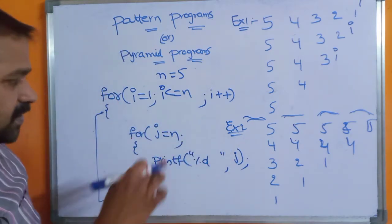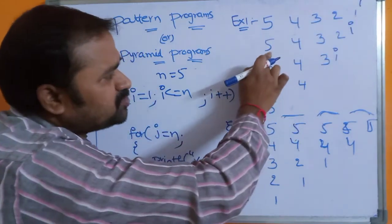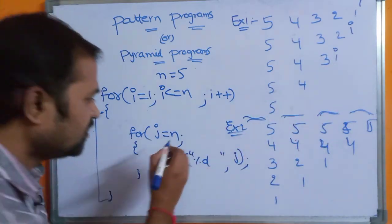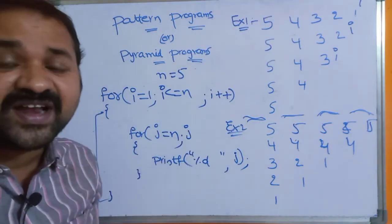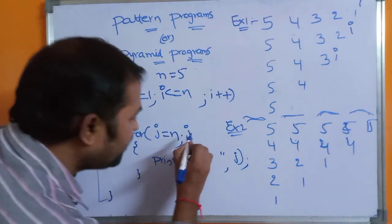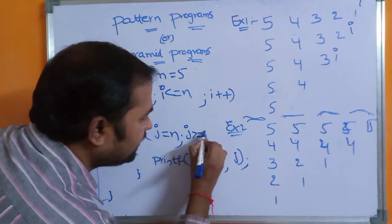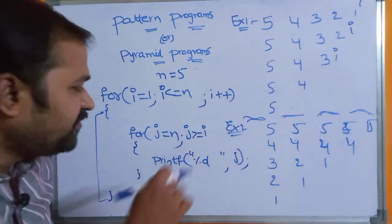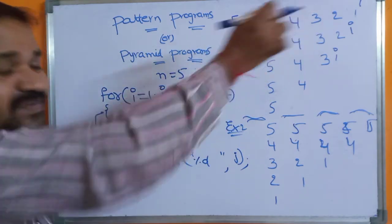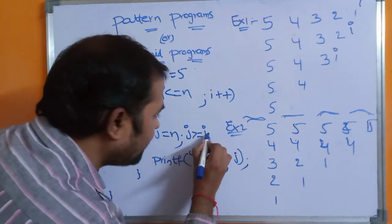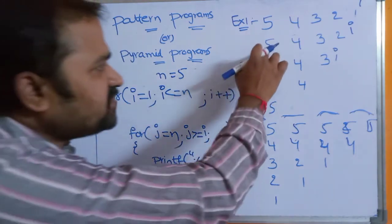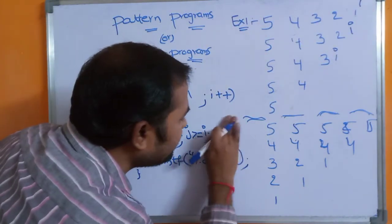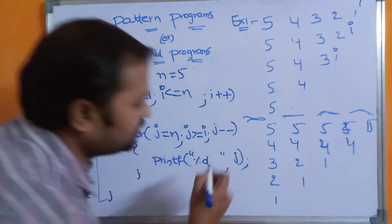For the innermost loop: j starts at N (5), the condition is j greater than or equal to i, and the expression is j minus minus (decrement). Every time we need to go from 5 down through each value, so j decrements each iteration. The condition uses greater than or equal to so that the last value at j equals i also gets printed.